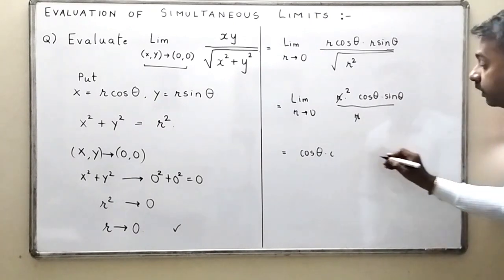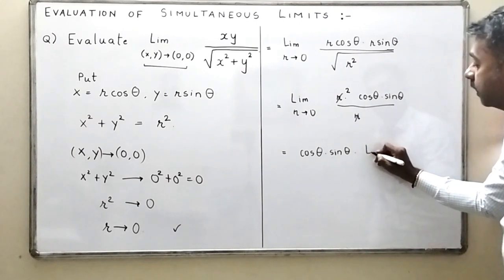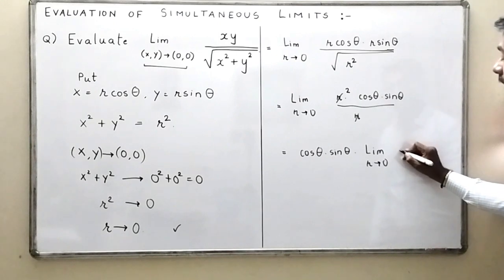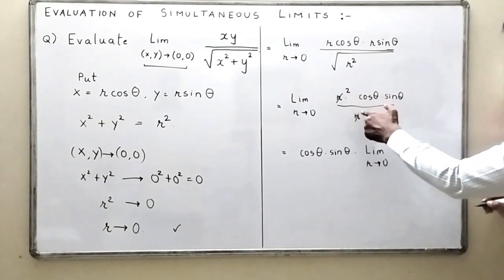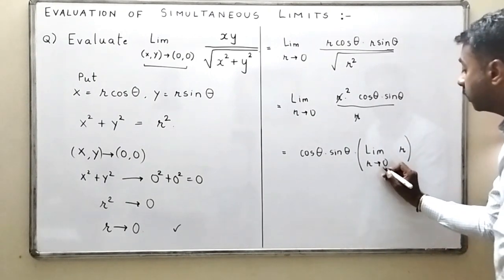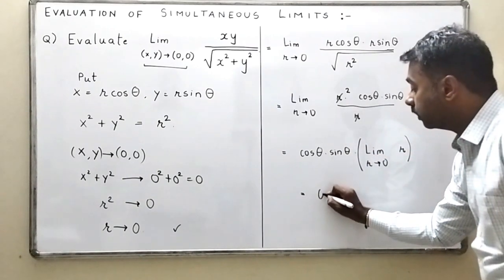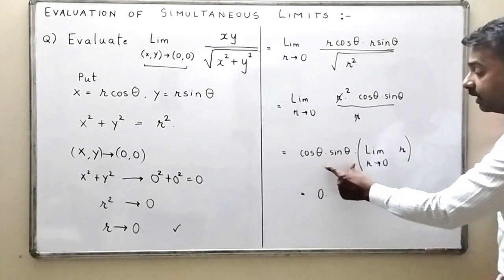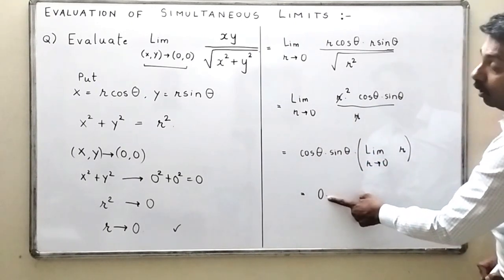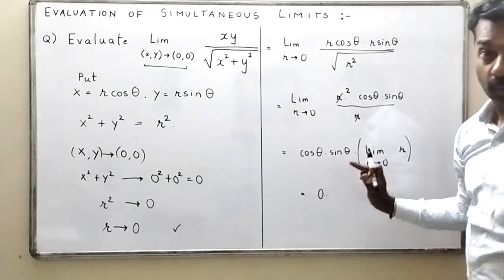cosθ sinθ comes outside the limit, and inside we have limit as r → 0 of r, which equals 0. So the final answer is cosθ · sinθ · 0 = 0. Therefore, the limit of xy / √(x² + y²) is equal to 0.